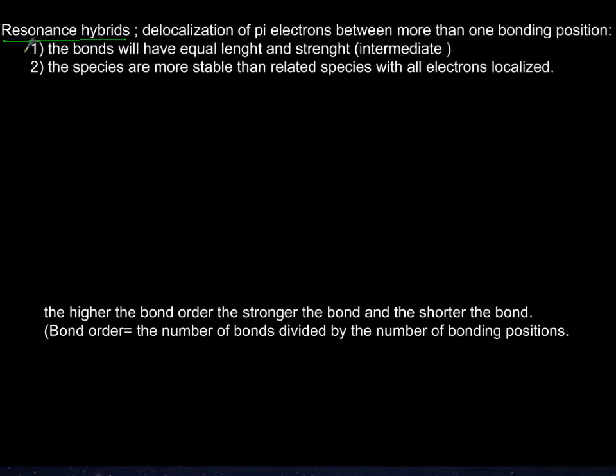First thing is that the bonds will have equal length and strength, something in between, for example, a single and a double. The second thing that is extremely important is it makes the species extremely stable because of the delocalization.